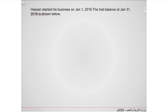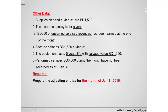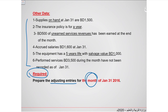Let's now see a comprehensive example covering both types of adjusting entries from the previous and today's lesson. Hassan started his business on January 1, 2016. The trial balance at January 31, 2016 is shown below — this is the trial balance of Hassan's company. There are six transactions. It is very important to read the requirement: prepare the adjusting entries for one month on January 31, 2016.